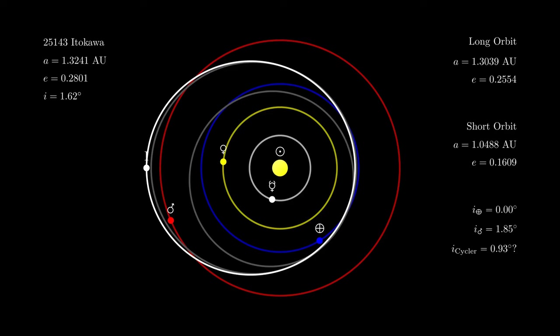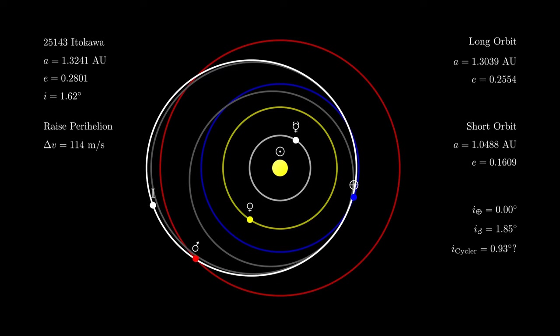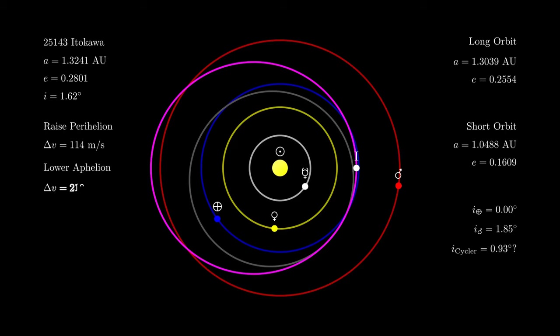First, you need to raise Itokawa's perihelion when it's at aphelion. That requires a delta-v, a net change in velocity, of about 100 meters per second. Then, you need to lower the aphelion when it's at perihelion. That's another 200 meters per second.